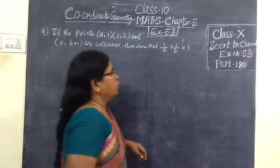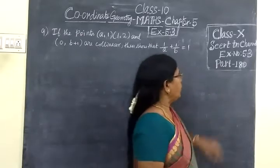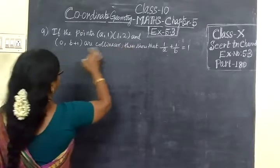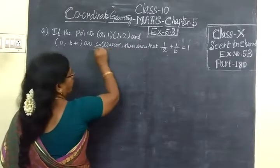Now we are seeing part 180, next is 5.3.97. It is given if the points, three points, are collinear.